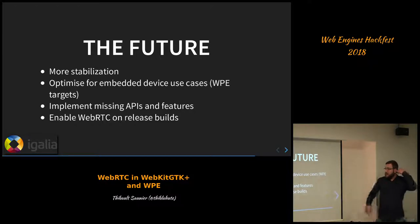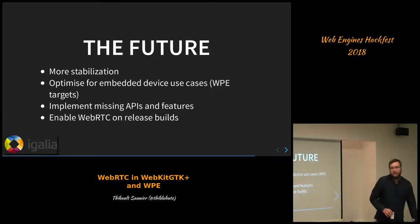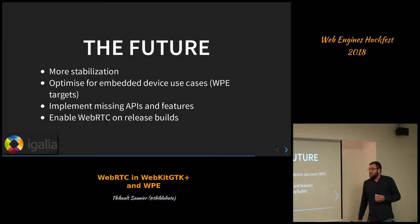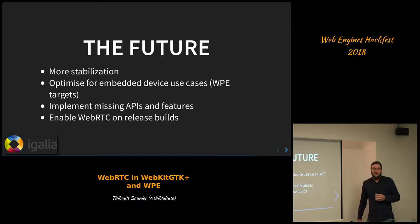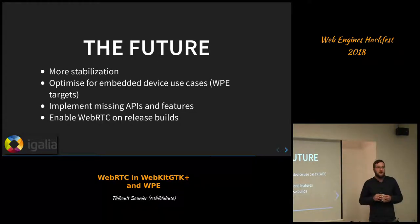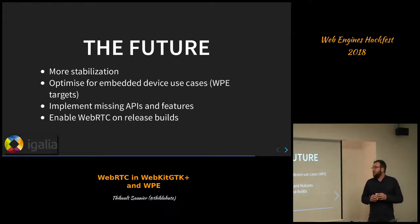We need to enable WebRTC on release builds, but for the distribution use case, we have licensing issues because LibWebRTC brings in BoringSSL, and we won't be able to distribute that on standard Linux distributions for Epiphany. So we have to think about what we will do. We're also thinking about just using the GStreamer implementation of WebRTC, which is getting better and better — so that's something we might do in the future.